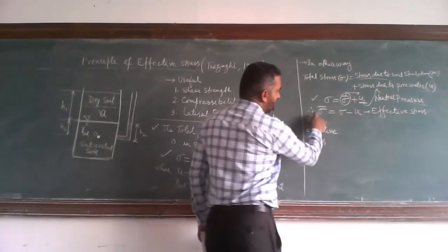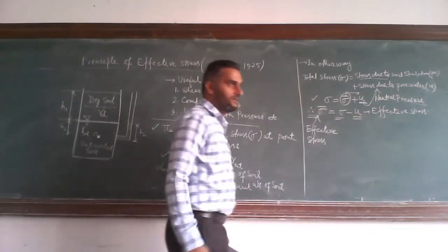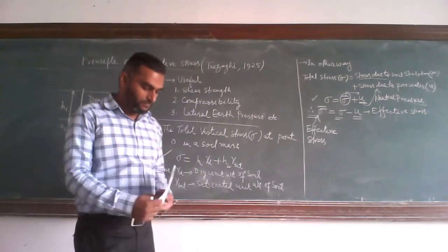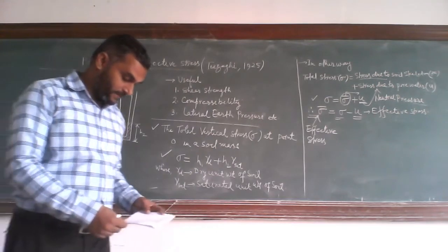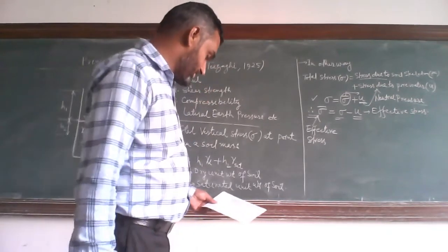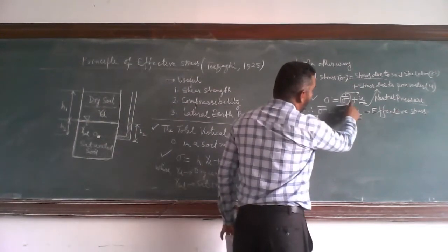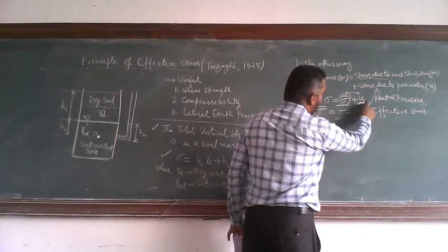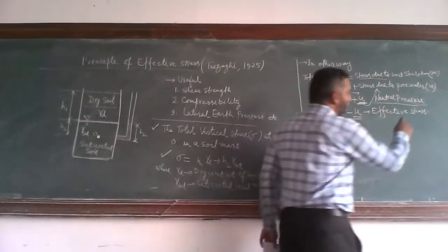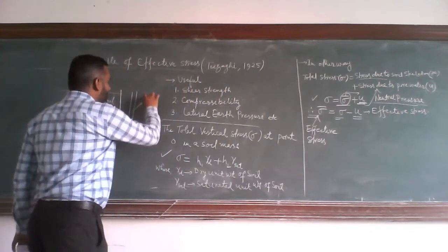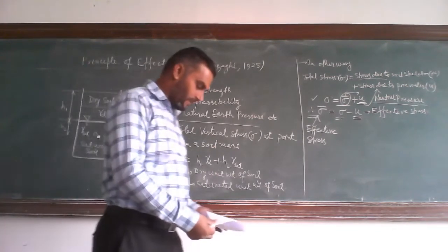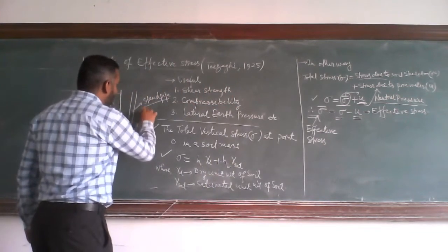Hence, effective stress equals total stress minus pore pressure. So effective stress is total stress minus pore water pressure, or neutral pressure. Stress due to the skeleton is called effective stress, and stress due to pore water is called neutral pressure. This neutral pressure can be measured with a standpipe or piezometer.